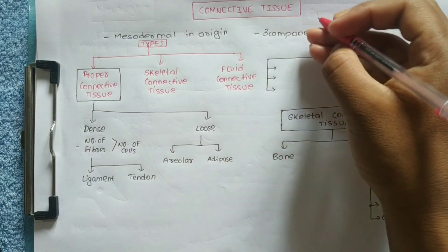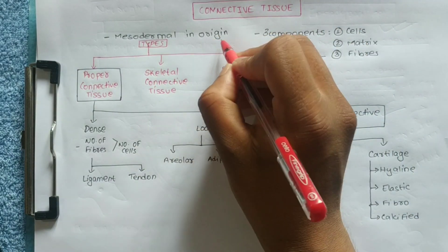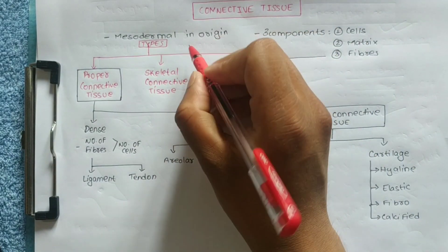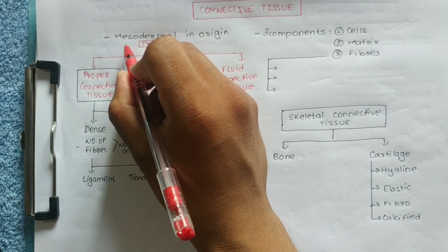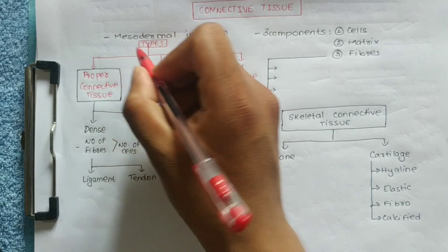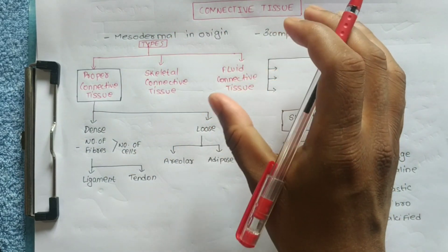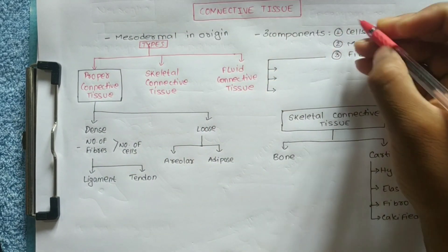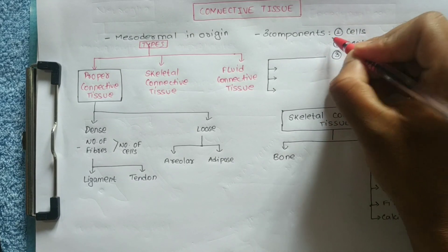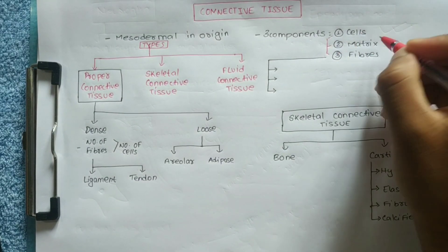Connective Tissue is mesodermal in origin. Connective Tissue is mainly made of three components.